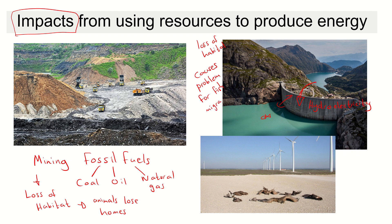We call it migration when fish move from one place to another to lay their eggs. So fish are the ones that are having a problem with hydroelectricity. Wind energy is produced by these big turbines, and wind power will cause a problem for birds — as birds fly into them, they can cause them to die. This is an impact from using energy resources to produce electricity.